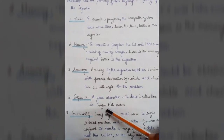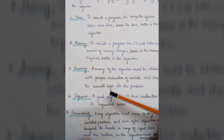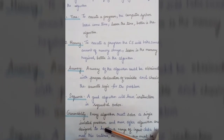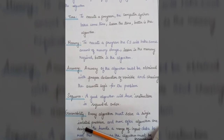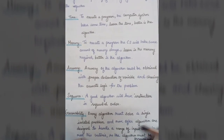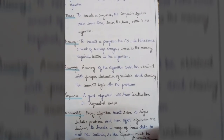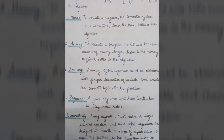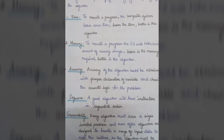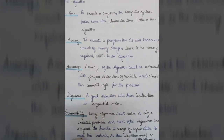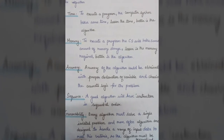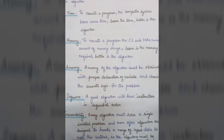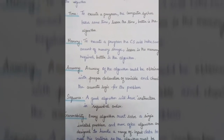Next is sequence — a good algorithm will have instructions in a sequential order. The last quality is generability. Every algorithm must solve a single isolated problem, but more often algorithms are designed to handle a range of input data, so the algorithm must be generalized. You write the algorithm only once, but when converted into a program it has to accept a wide range of inputs, not restricted to one or two.